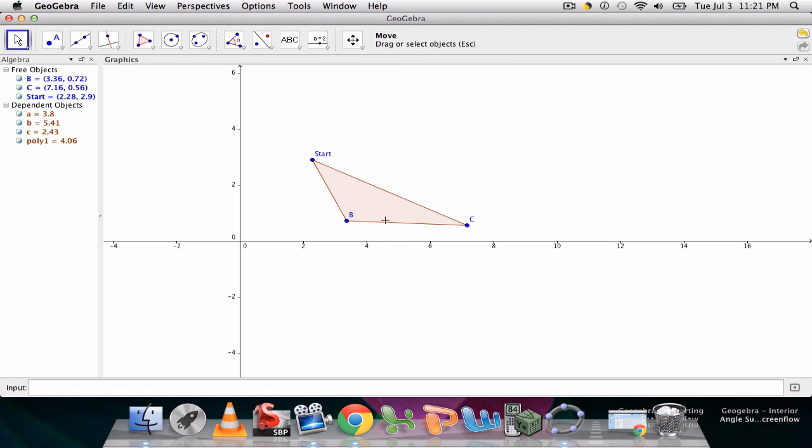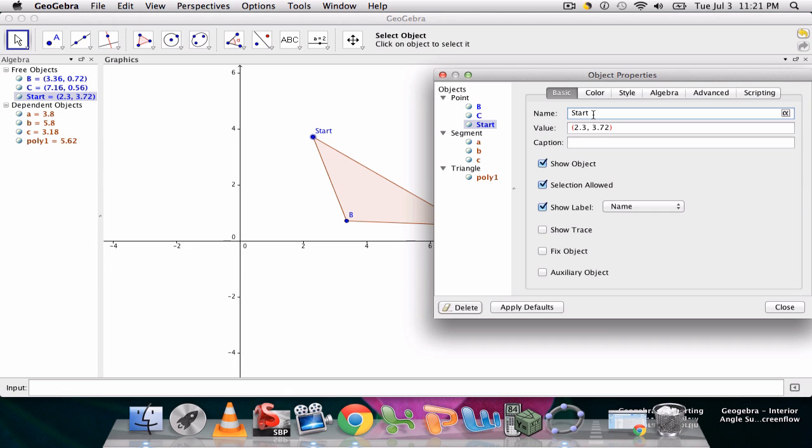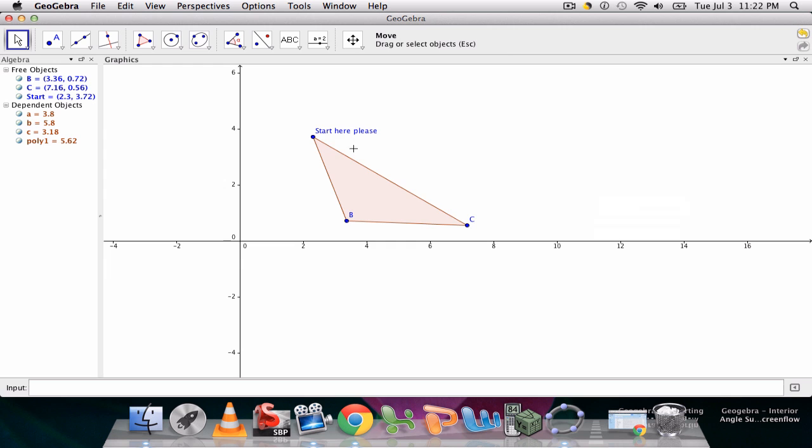Okay, so it follows that clearly it only shows one word. But maybe I want to show the caption 'start here please', and then under show label what I could do is only show the caption. And now what I've done is attached some text to this point.